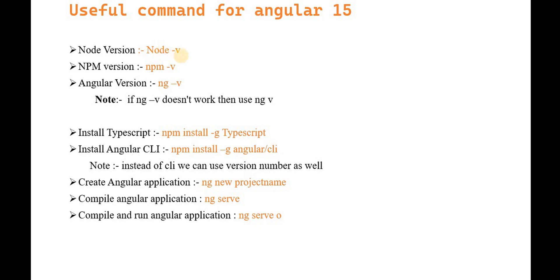Through that we can get the node version. Similarly, to get the npm version we have npm -v, and for the Angular version we have ng -v. If ng -v is not working on your system, you can use the ng version command also. To install TypeScript, we have npm install -g typescript, and to install the latest Angular CLI, we have npm install -g @angular/cli.